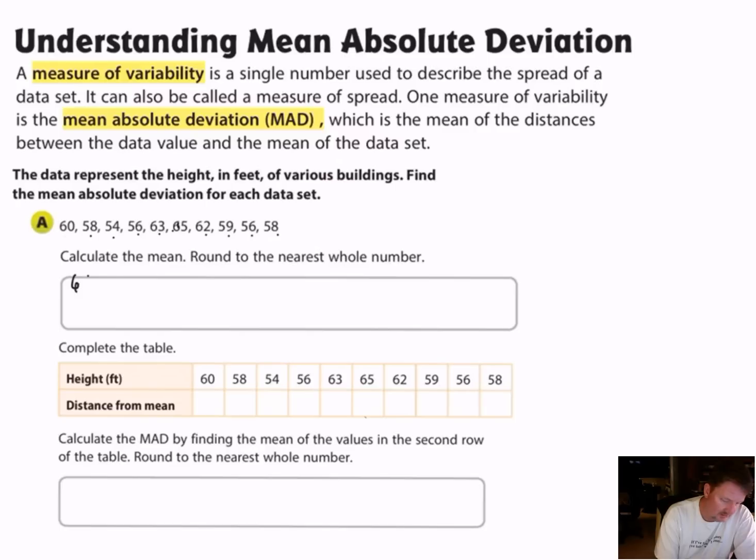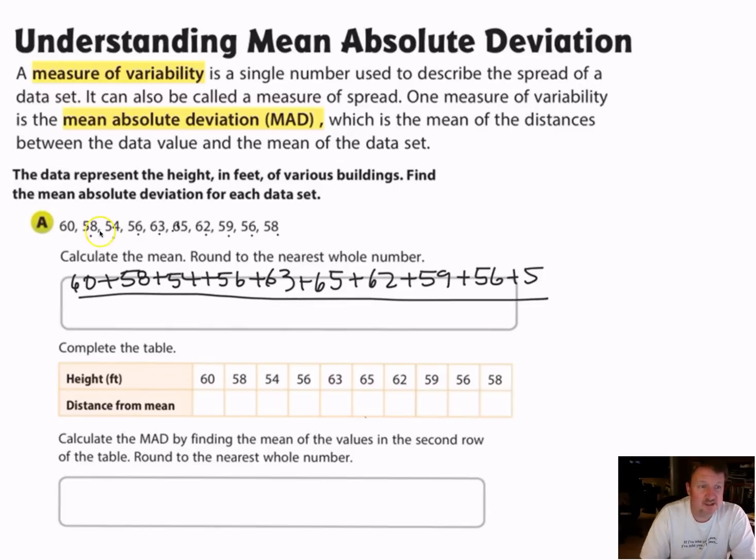So I want to take my values and I want to go ahead and figure out the mean. So I'm going to say 60, and here I'm just adding my numbers up and coming up with my average. And I'm going to divide that by how many pieces of data there are. So there's one, two, three, four, five, six, seven, eight, nine, ten. So I'm going to divide by ten. And if I add all these numbers up and I divide by ten, I'm going to get 59.